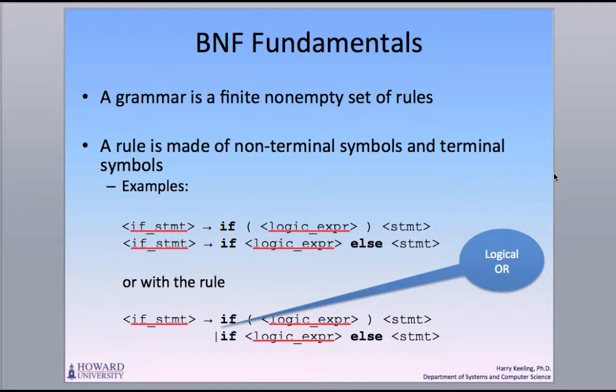A grammar is a non-empty set of rules, or in other words, a set of productions. The abstractions in a BNF definition, or grammar, are called non-terminal symbols, or simply non-terminals. Abstractions are representations that represent more complex representations.